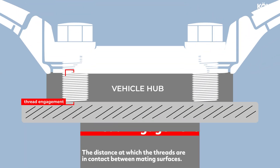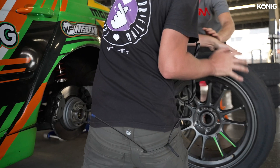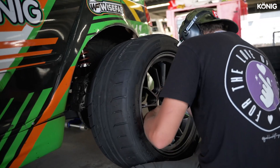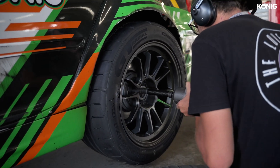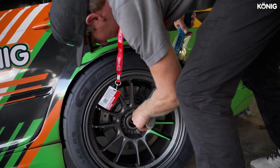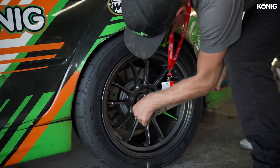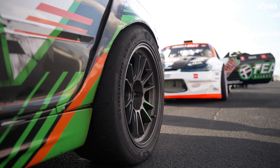Thread engagement is essentially the amount that a lug nut threads onto a stud, or the amount that a lug bolt goes into the hub. That is what is used to create the clamping stress and clamping force to hold your wheel onto the car. What we're trying to do is make sure that that lug nut has sufficient grip and sufficient clamping force — enough bite — so that the fastener is threaded on or threaded in enough that those threads can apply that force equally and actually provide the protection you need to keep your wheel on the car.